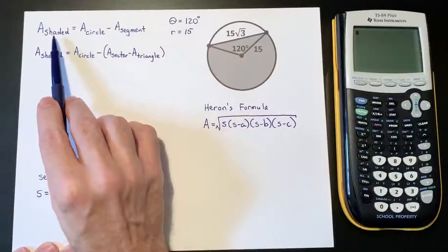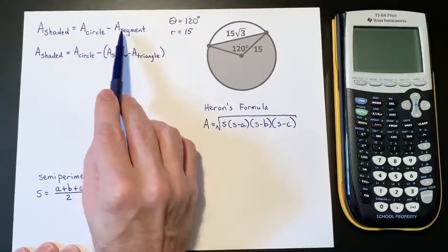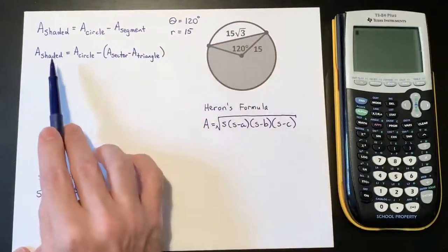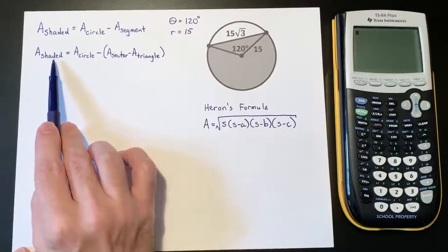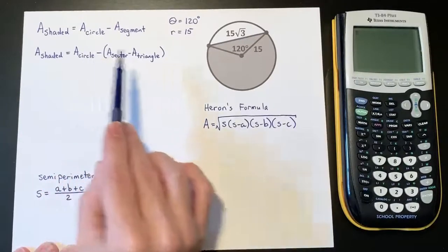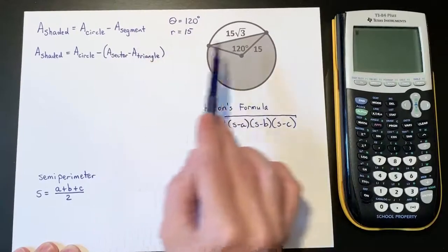Well, the area of the shaded region is going to equal the area of the circle minus this unshaded segment. If we add in what we know about the area of a segment, the area of the shaded region will be the area of the circle minus the area of the sector minus the area of this triangle.